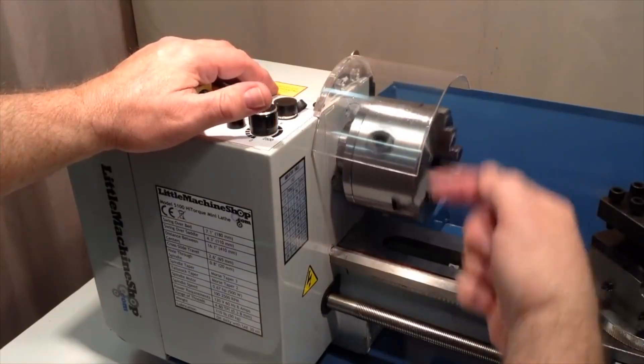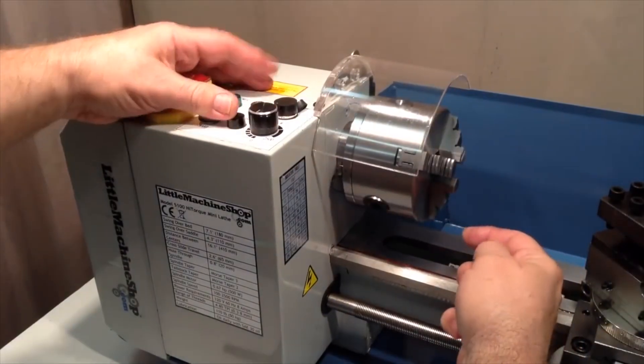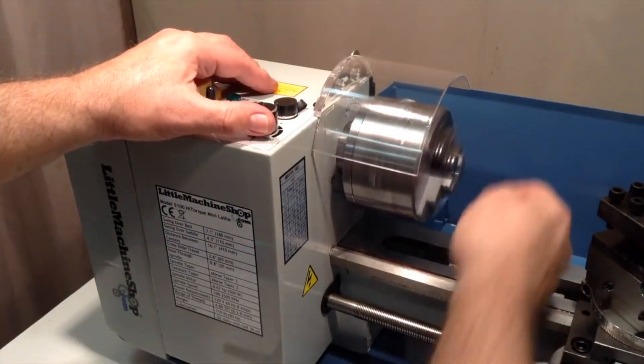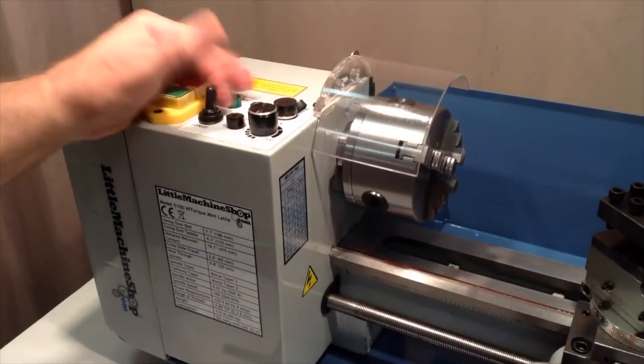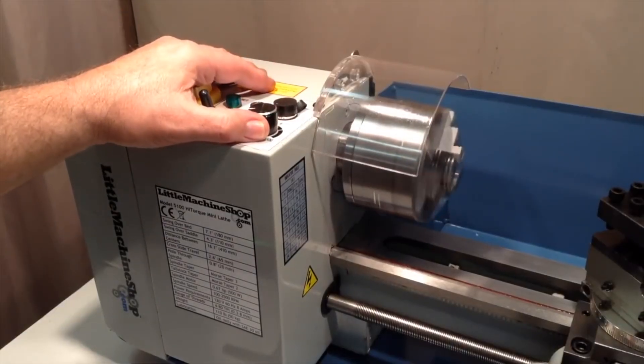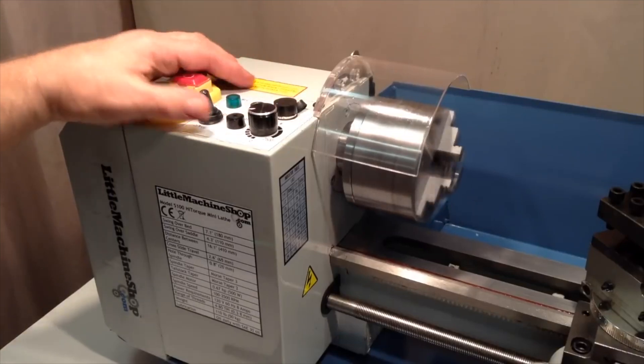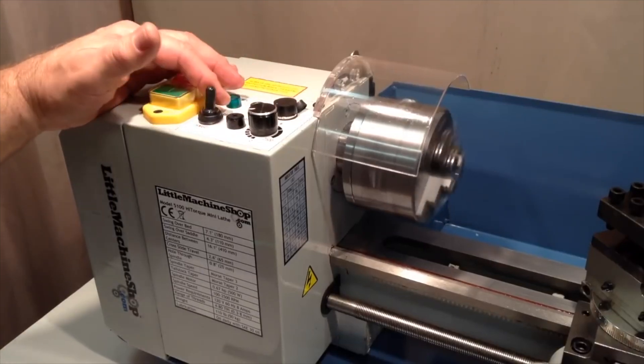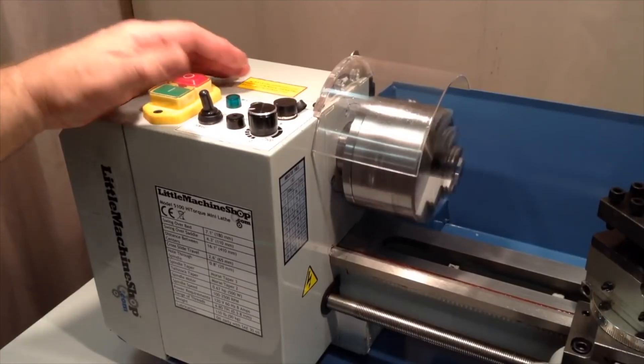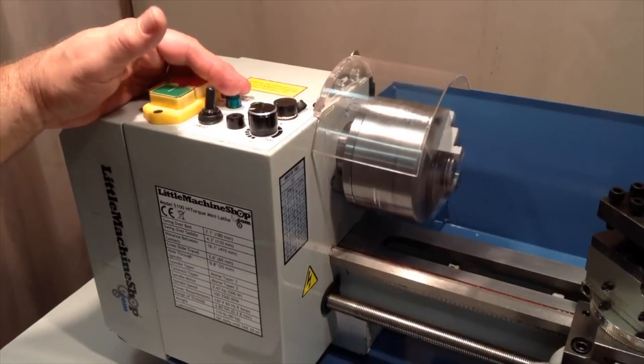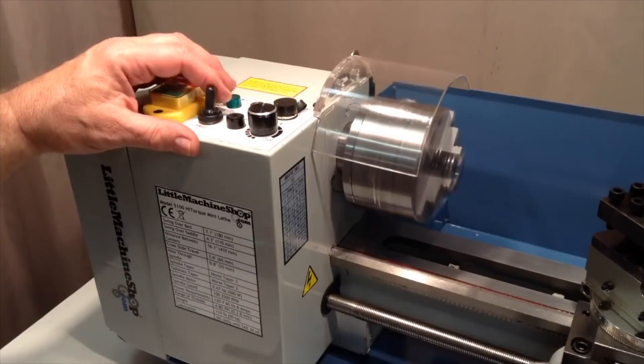So normally the work is going to be turning towards you like this, and then the reverse direction will be moving away from you. One interesting feature of this lathe, because of its intelligent speed controller, you can actually switch between forward and reverse without stopping it in between, and it is capable of handling that even at pretty high speeds.